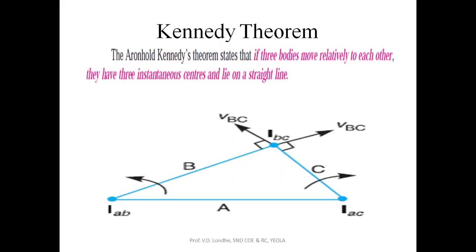Kennedy's theorem states that if three bodies are having relative motion with respect to each other, then their instantaneous centers — there are three instantaneous centers — will lie on a straight line. If the three bodies are having relative motion with respect to each other, then their ICRs will be lying on a straight line.